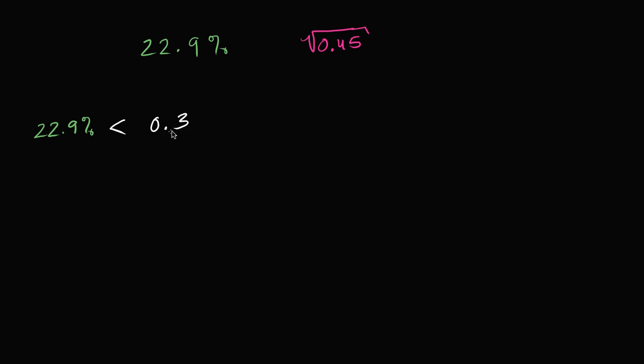And then we could try to compare 0.3 to this thing here. If 0.3 is less than this, then 22.9% is going to be less than this because it's less than 0.3. So why don't I change the problem to that? Let's compare 0.3 to the square root of 0.45.